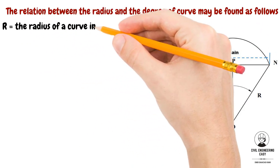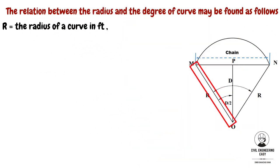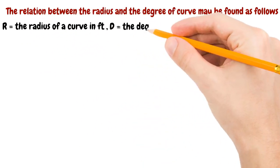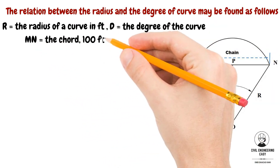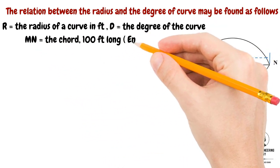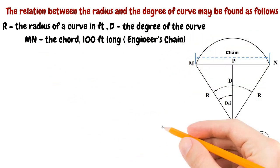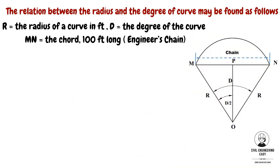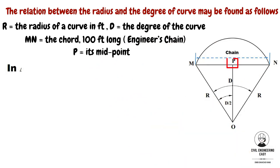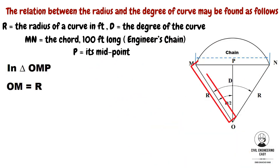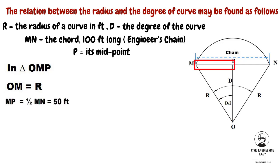Let R equal the radius of the curve in feet, D equal the degree of the curve, and MN equal the chord. In the engineer chain, the length of one chain equals 100 feet. P is equal to its midpoint. In triangle OMP, OM is equal to R, and MP is equal to half of MN.